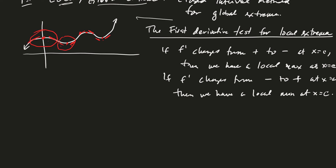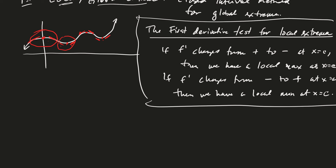This is a nice test for local extrema. To find local max or min, first compute the critical points — those are the candidates at c. But just because the derivative is zero doesn't mean you have a local max or min; you could have just a plateau. So the test is really determining whether we have a plateau or a local max or local min.